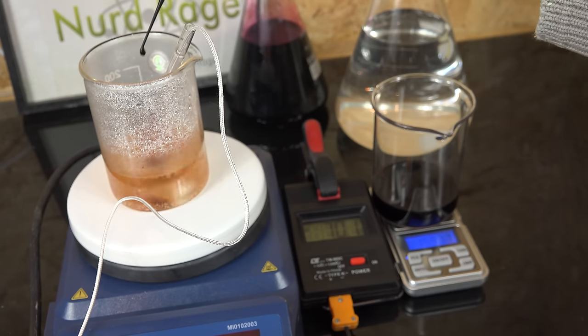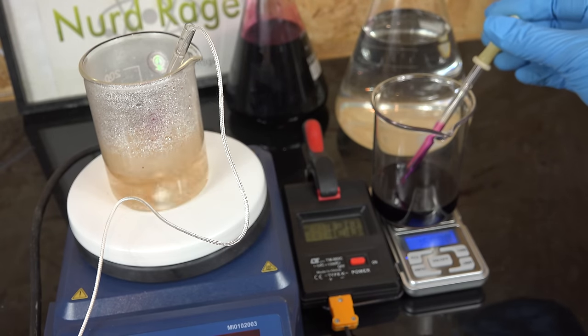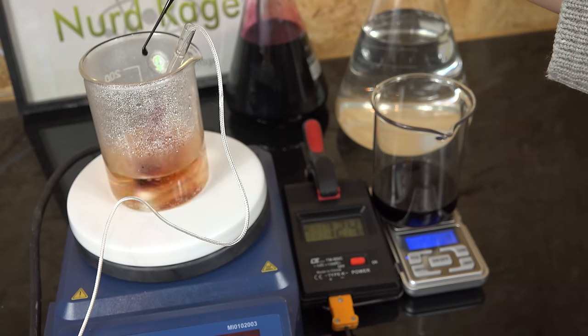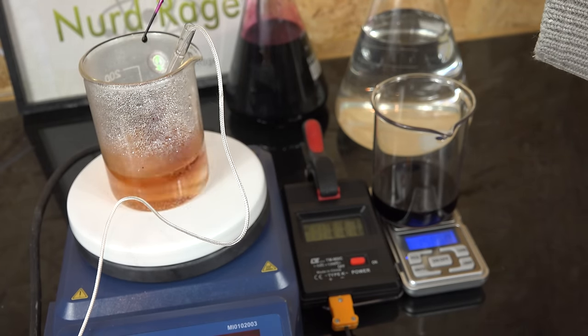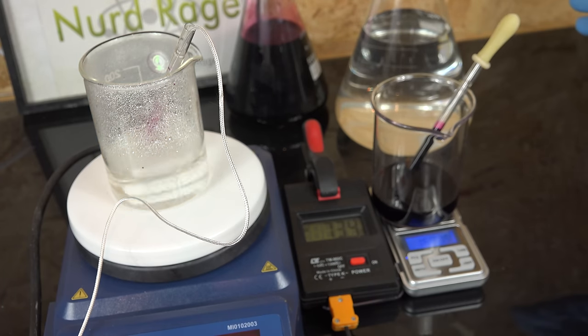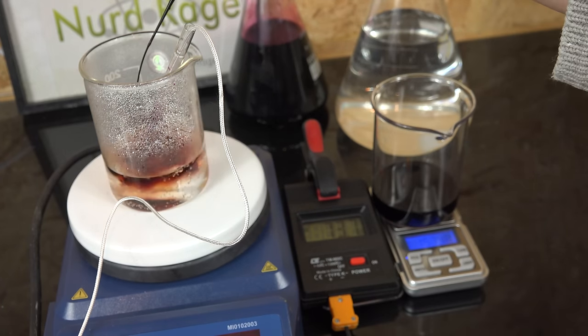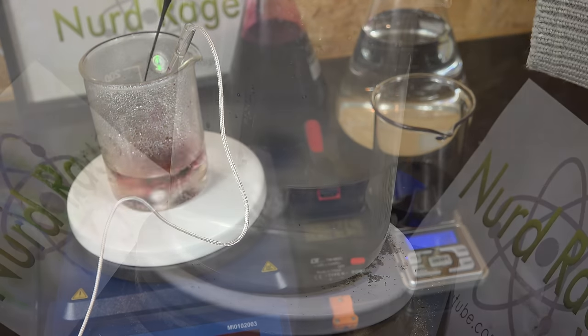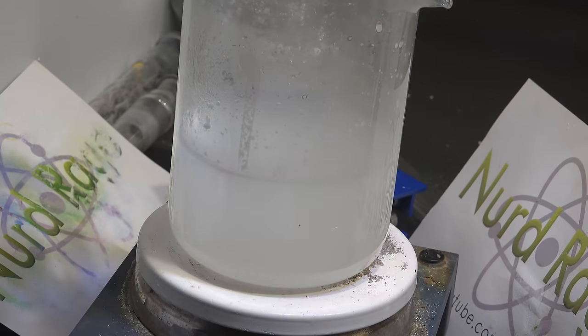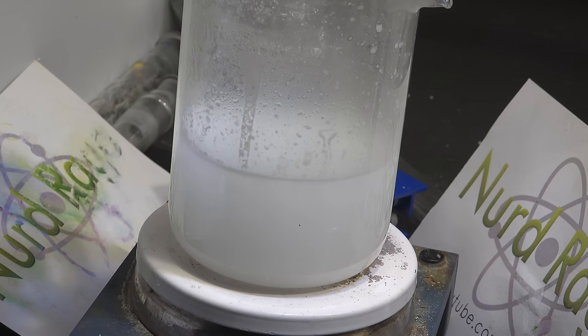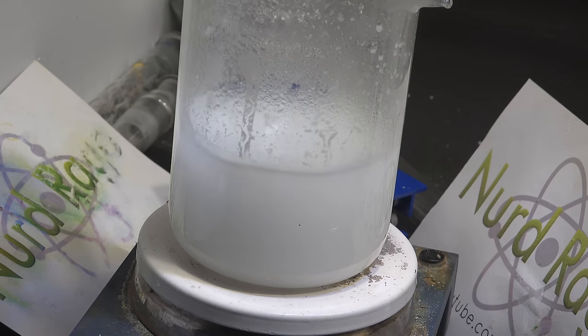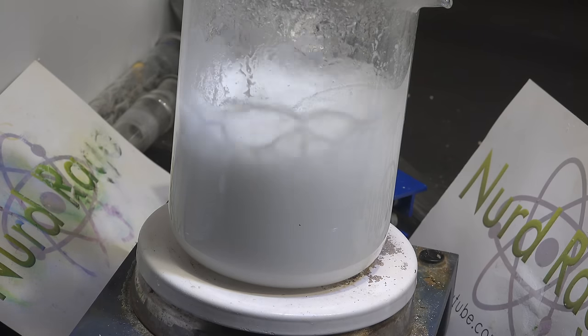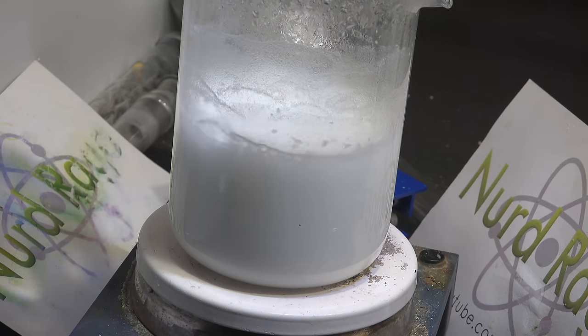The process of measuring and calibrating our titrant is called standardization. To standardize potassium permanganate we need a reference standard of high purity, stability and simple definite chemistry. These standards are also called primary standards or analytical standards. They're kind of like calibration weights. For potassium permanganate a common primary standard is sodium oxalate. And we made that in a previous video. It's convenient for the amateur since it's easy to make and purify.